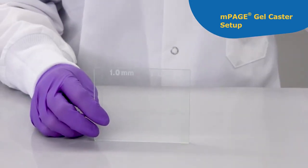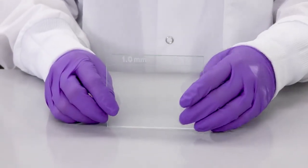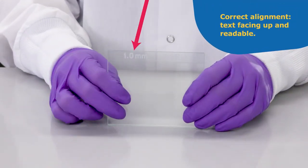Place the short plate on top of the spacer plate to form a cassette. Orient the spacer plate so that the text is up and readable.